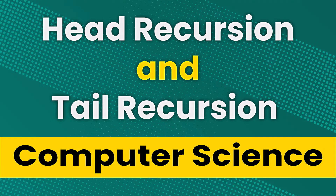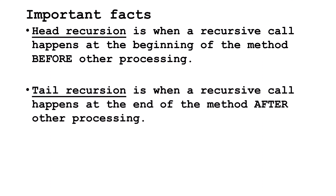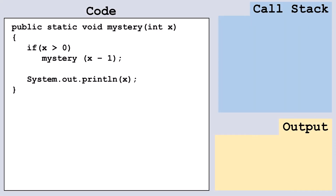In this tutorial we'll explore head and tail recursion. Head recursion is when a recursive call happens at the beginning of the method before other processing. Tail recursion is when a recursive call happens at the end of the method after other processing. There are other circumstances where processing may happen both before and after a recursive call. Our code samples are written in Java, but these concepts can be applied to other programming languages like JavaScript, Python, or C++.